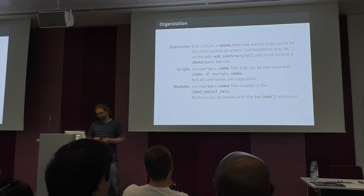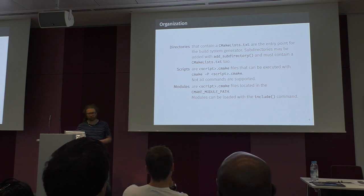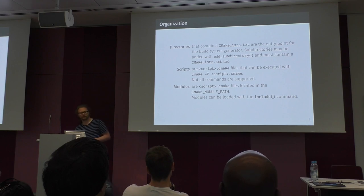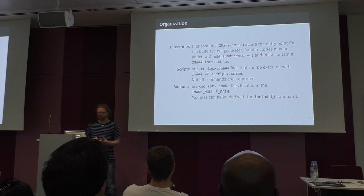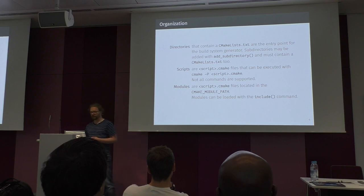Then we have modules which can be included with the include command. They are located in the CMake module path, which is a CMake variable that contains a list of directories. Depending on where the module is included from — whether it's from a directory or from a script — only certain commands are available.